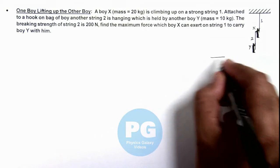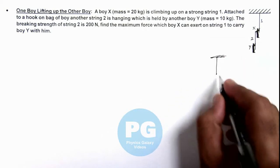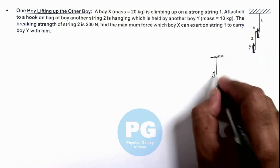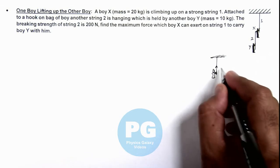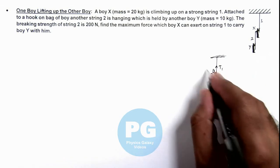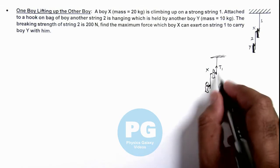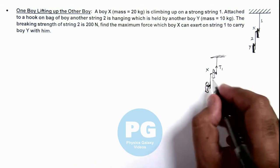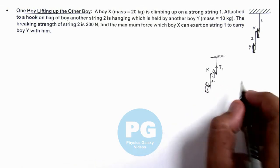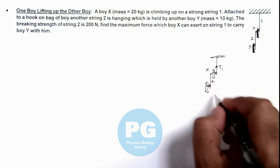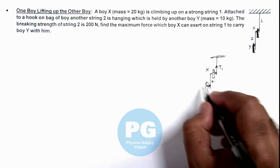Here if I draw the situation again, here I can see the string 1 will gain a tension T when due to which Boy X as well as Boy Y is hanging on the string of Boy X, which is string 2.